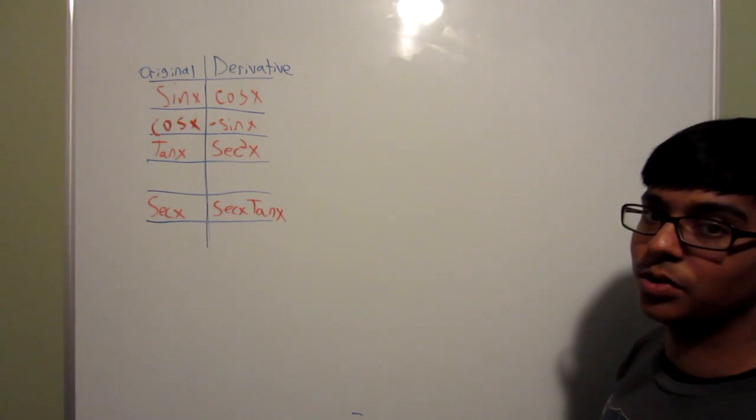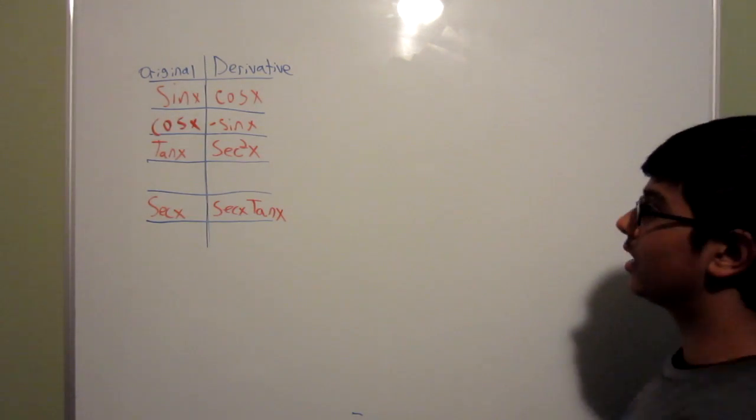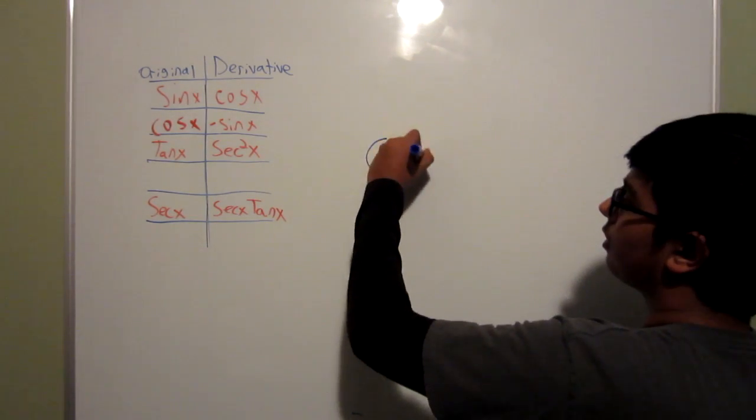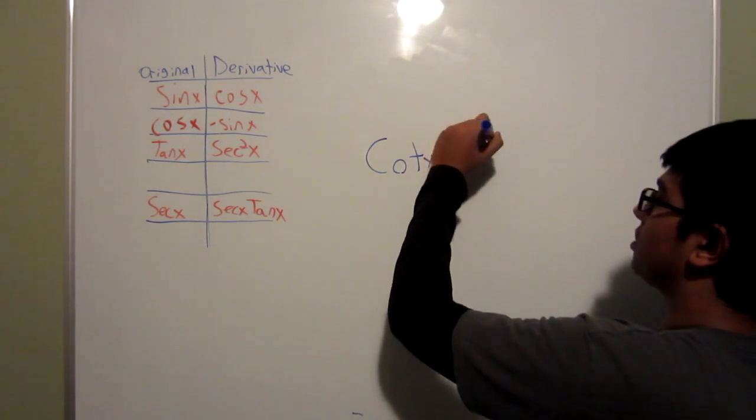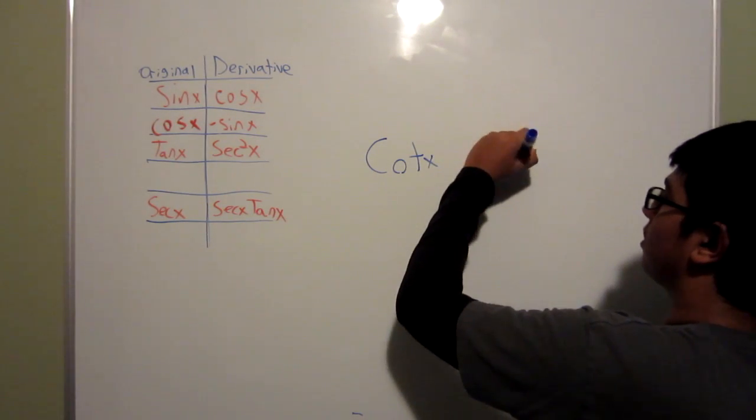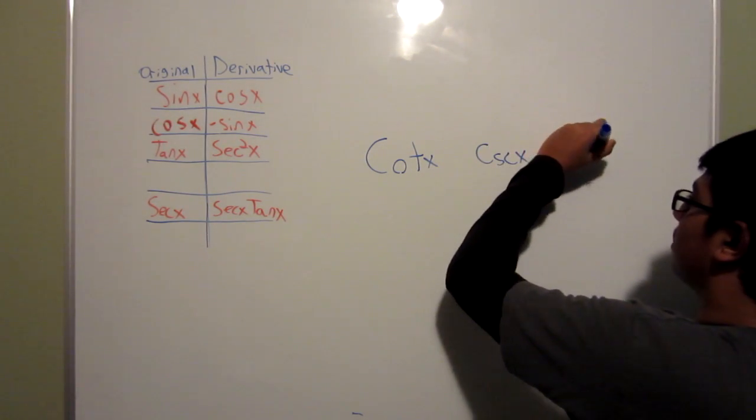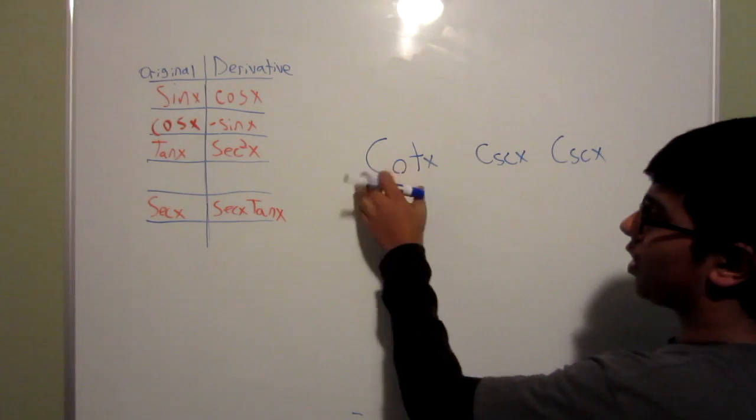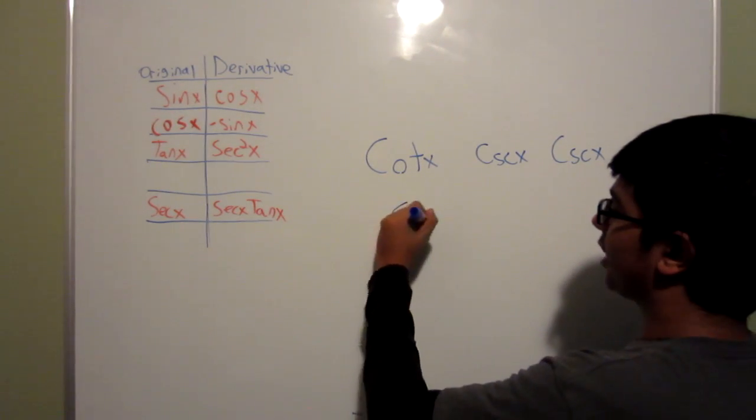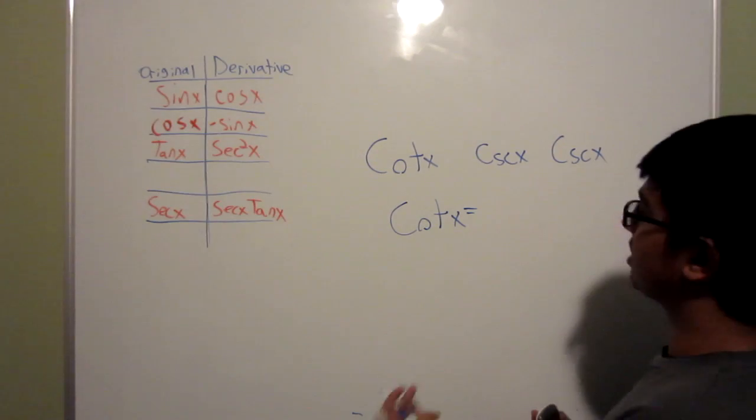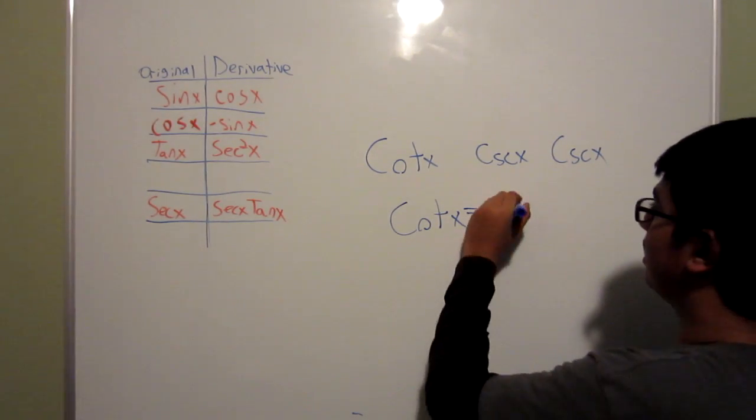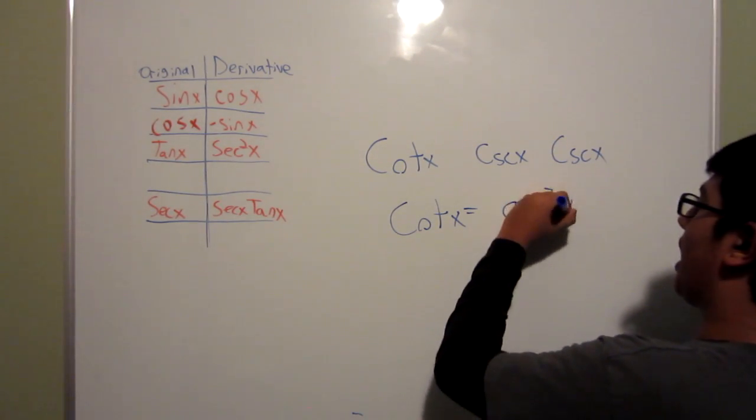So the same shortcut applies to the cotangent and cosecant. So you have one cotangent, and you have two cosecants. You just, you start off with the one you have, so let's start off with cotangent, and you multiply by the ones that you're missing. So the two cosecants. So you'll get cosecant squared x.